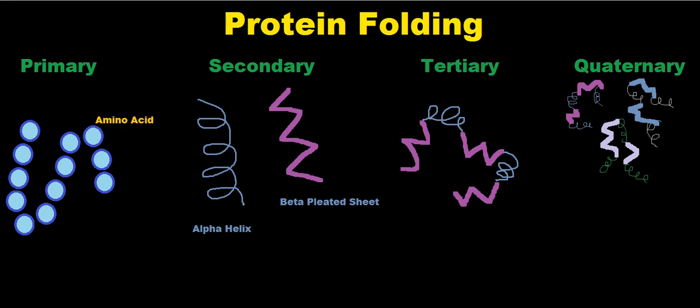There are several ways that proteins fold. We have four different types of protein folding: primary, secondary, tertiary, and quaternary.